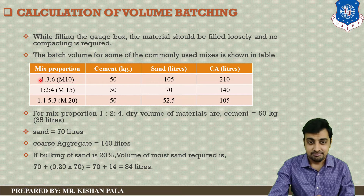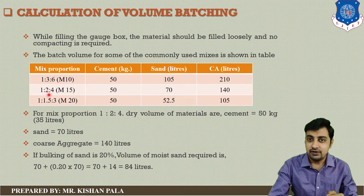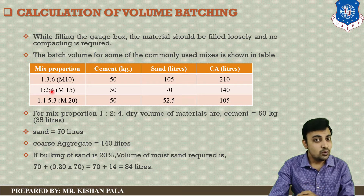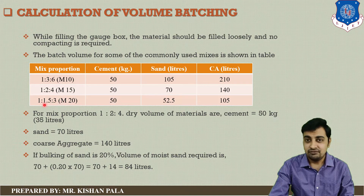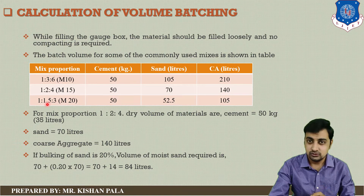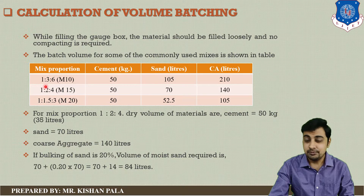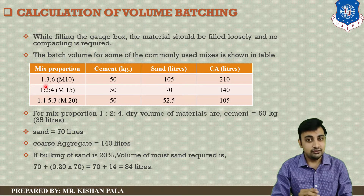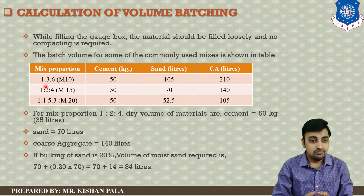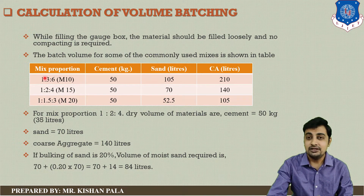For M15, the proportion is 1:2:4 — 1 part cement, 2 parts fine aggregate, and 4 parts coarse aggregate of the total volume. For M20 it is 1:1.5:3 — 1 part cement, 1.5 parts fine aggregate, and 3 parts coarse aggregate. Depending upon the grade of concrete, the mix proportion changes. You need to do a mix design for the final mix proportion of particular values; these are lump sum values for small construction work.